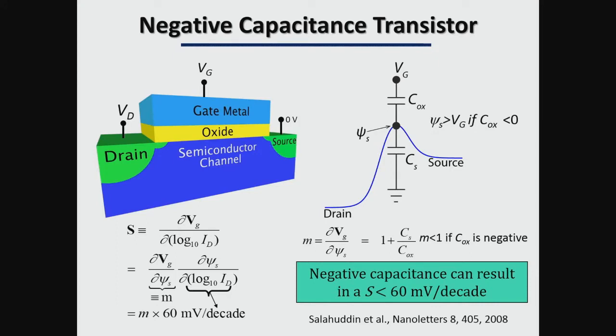The basic concept is to replace the gate oxide with a negative capacitance material. In a conventional transistor with a positive capacitance gate oxide, for a given gate voltage the interface potential at the oxide-semiconductor interface will always be smaller than the applied gate voltage. But if you replace the oxide with a negative capacitance material, for a given gate voltage you can have a larger interface potential, and as a result for a smaller gate voltage you can have a larger charge and in turn a larger current compared to a conventional transistor.